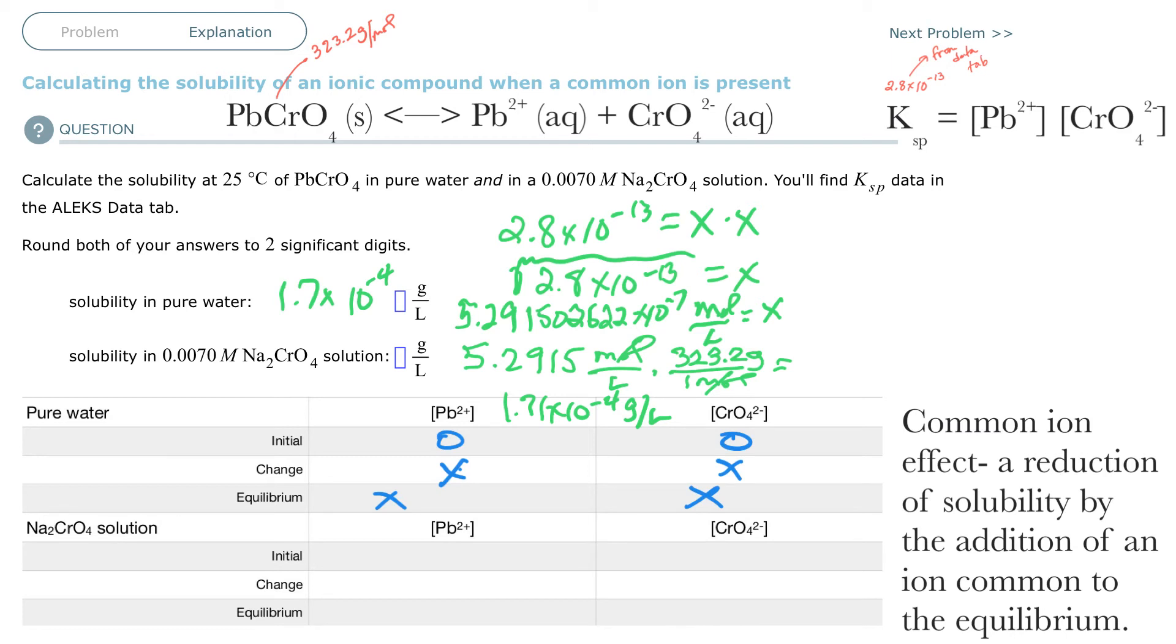Okay, so there's my first question. The second one, when I go back and do the ICE table, I have zero initial lead, but I've added 0.0070 molar of sodium chromate. Okay, sodium chromate over here. Sodium chromate, well the sodium doesn't do anything, but the chromate is an ion that's common. So what it'll do is it will drive the equilibrium back over towards lead chromate, which is less soluble. So it will be 0.0070. X and X, this is the change, the same as before. And just like before, lead will be X, but this is going to be 0.0070 plus X.